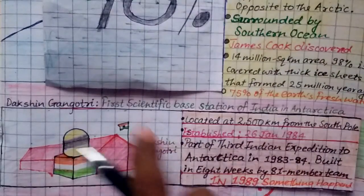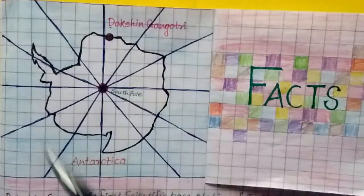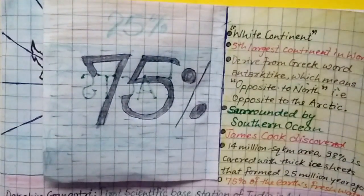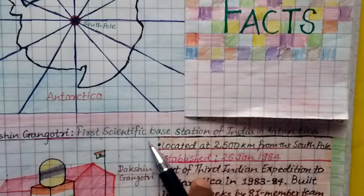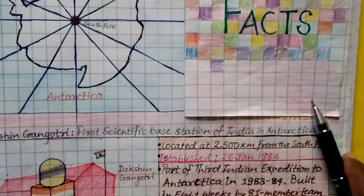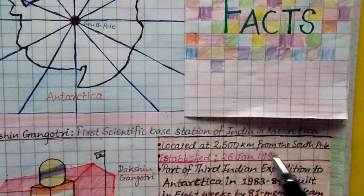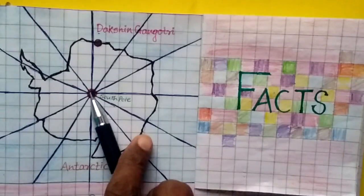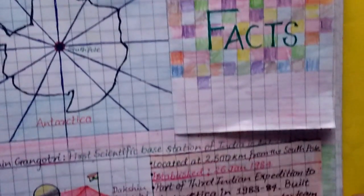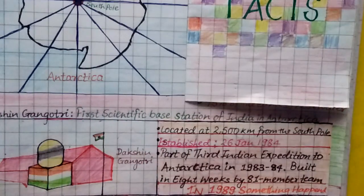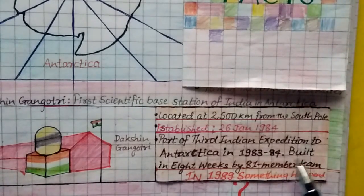Now let's move forward with Dakshin Gangotri. This is the first scientific base station of India in Antarctic, located approximately 2500 kilometers from the South Pole.